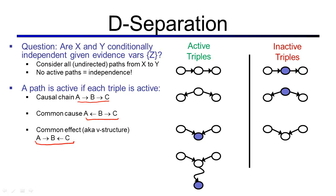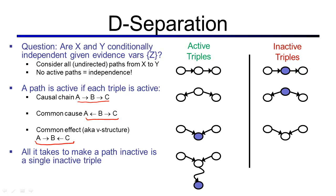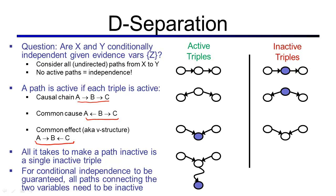When we look at an undirected path, we can break it down into all its triples and for each triple decide whether it's active or inactive by looking it up in this table. All it takes to make a path inactive is to have just one inactive triple along that path. To be able to declare conditional independence, all paths connecting the two variables need to be inactive.